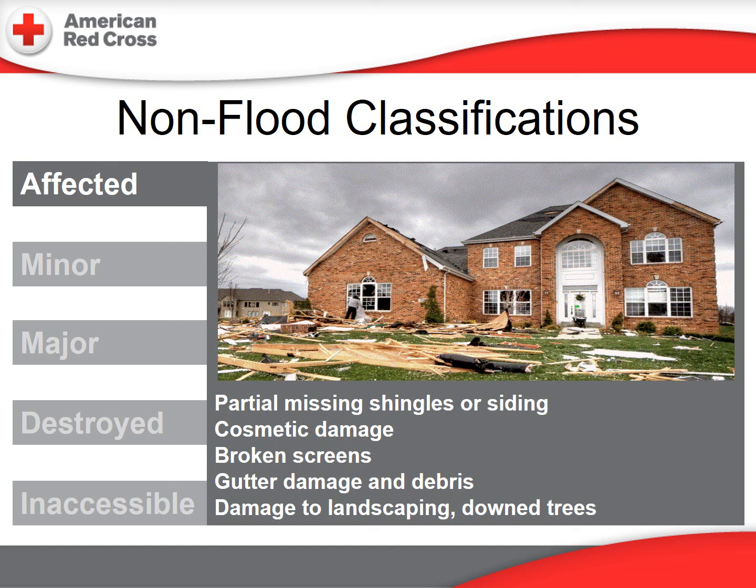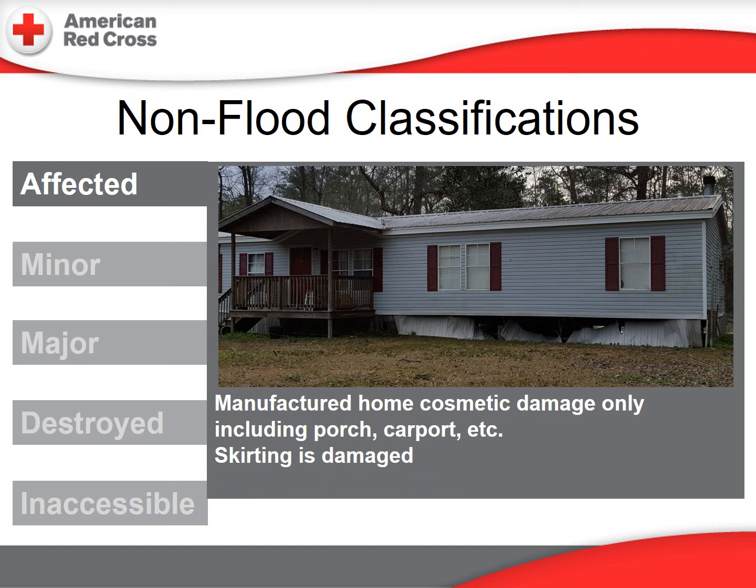Now, some photos to help visualize what all these words mean. First, we will look at non-flood examples. The home shown here would probably be classified as affected. You'll notice partial or missing shingles, cosmetic damage, broken screens and windows, gutter damage, and debris, which can also include landscaping and downed trees. This manufactured home suffered only cosmetic damage, including perhaps damage to the porch or carport, and as you can see, the skirting is damaged.